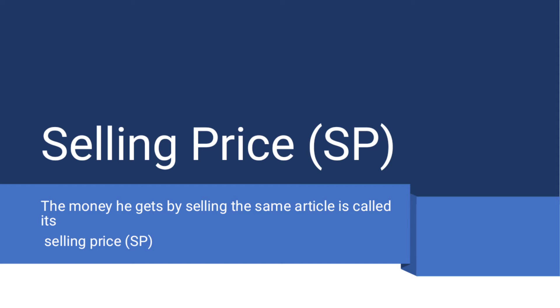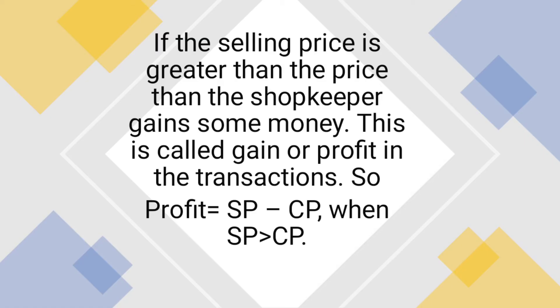Let us learn a few points of profit and loss. First, if the selling price is greater than the cost price, then the shopkeeper gains some money. This is called gain or profit in the transaction. So profit is equal to SP minus CP, when SP is greater than CP.